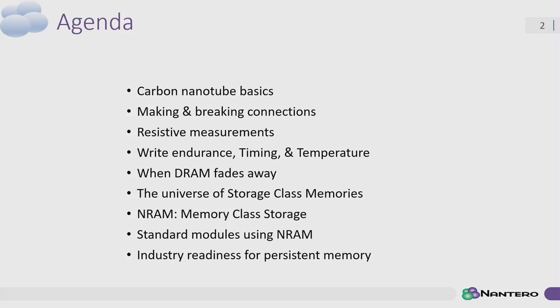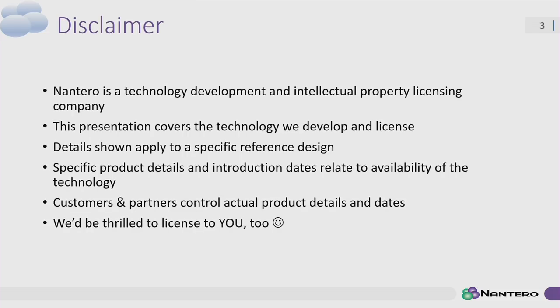I want to take that technology description and translate it to system-level effects — like when DRAM goes away, what are you going to do? I think we have a nice solution to replace DRAM. I'm going to introduce a new term, 'memory class storage,' and justify why the industry needs it. A disclaimer: we are an intellectual property and design house, a lot like ARM. The specific details about when products go to market are controlled by our customers.